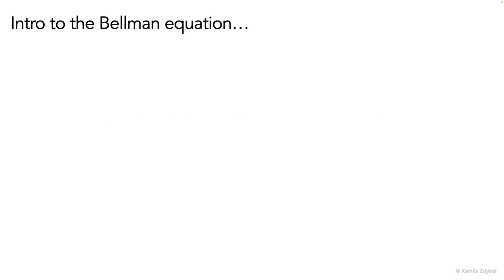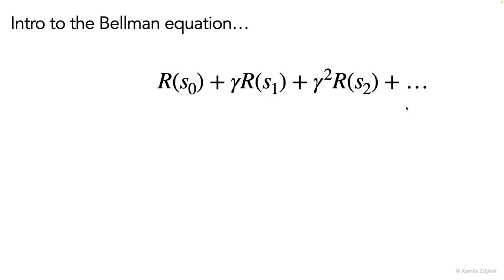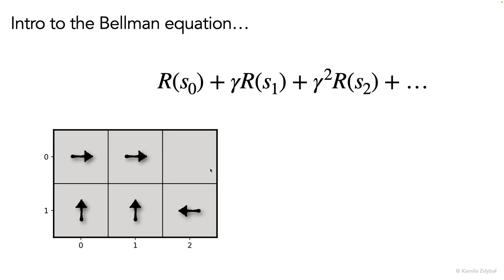So we'll now build the Bellman equation step by step. Let's start by writing out this specific sequence of rewards, which we call the total payoff. It's composed of rewards received in each state that the agent visits, starting from some initial state s zero. To visualize this, let's say that s zero is over here.